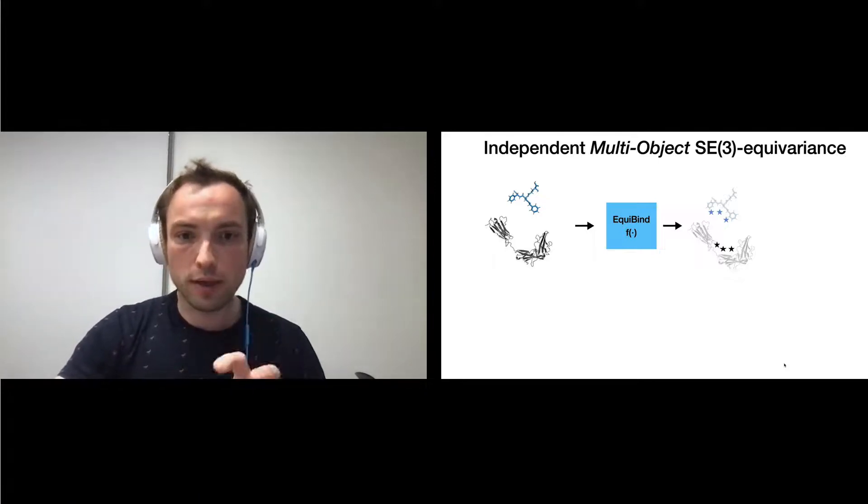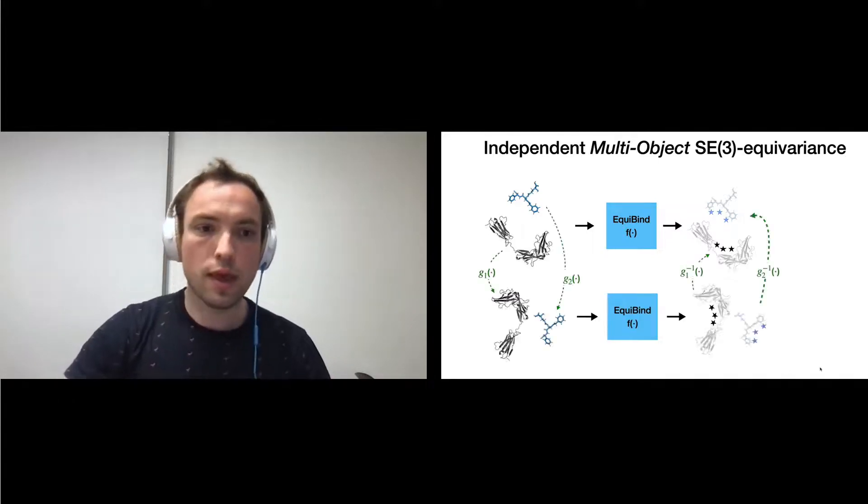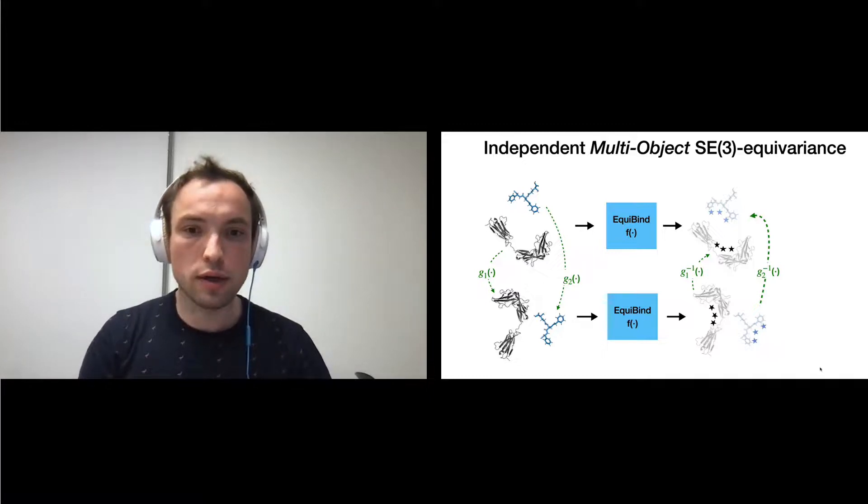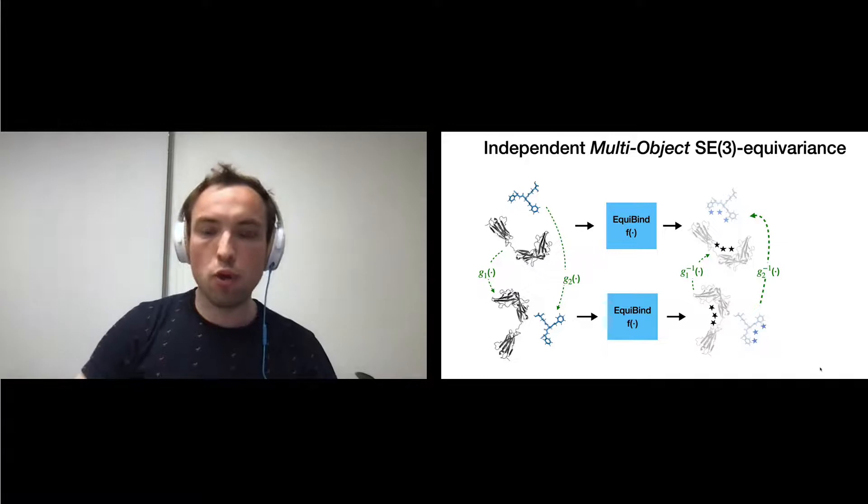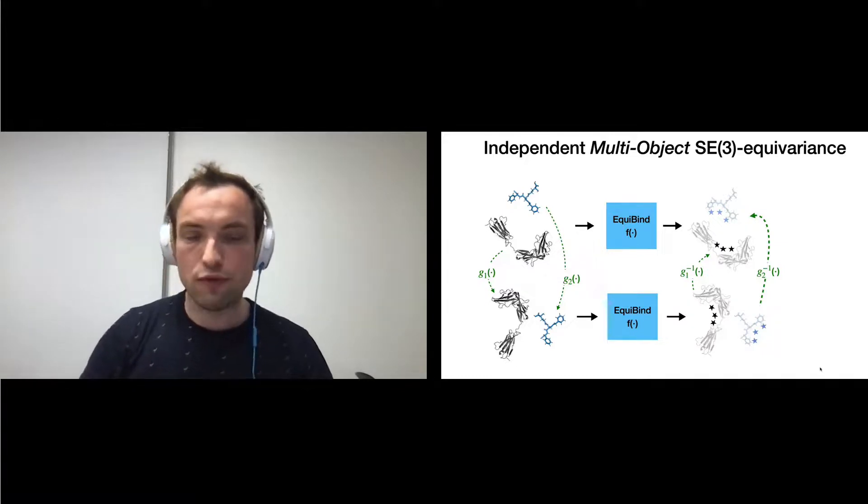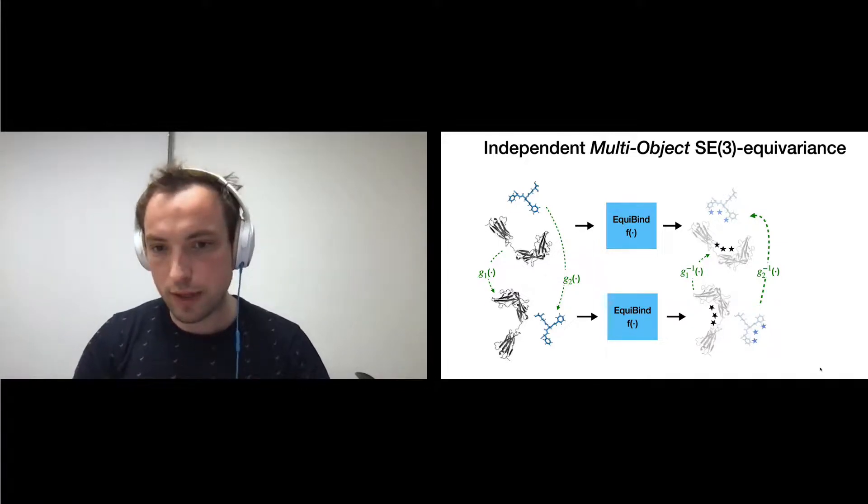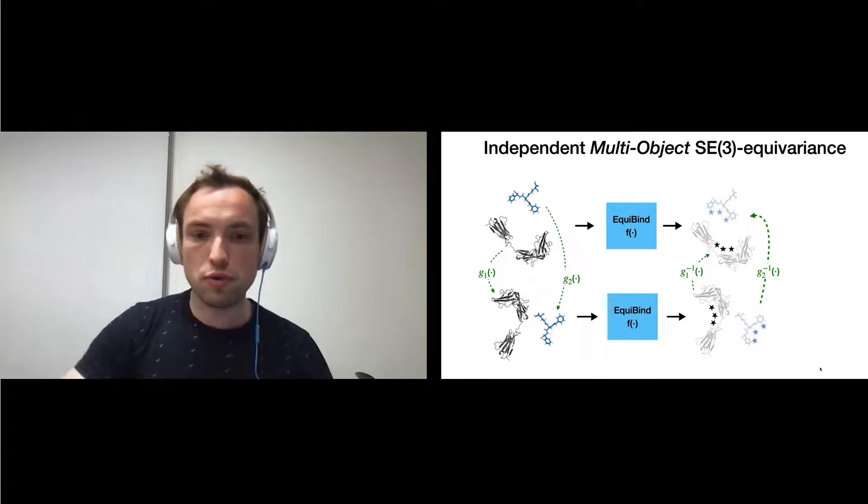So, our EquiBind model is going to take the two molecules as input and predict two key point sets as output. If these two molecules are transformed with independent SE(3) transformations, then the output of our EquiBind model, if it reverts these independent SE(3) transformations, is going to close this diagram.